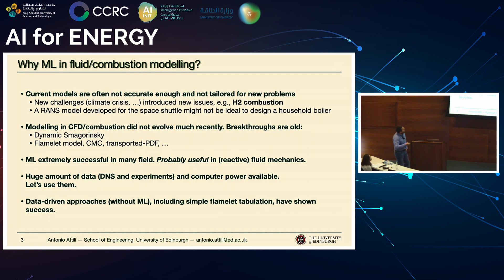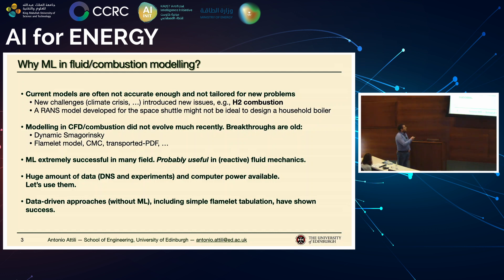Here are a couple of thoughts about why we could use machine learning in this field. One thing is that most of the models we have are certainly not completely reliable or accurate for what we would like to do. One reason is that we have new challenges created by today's world — the climate crisis means hydrogen and many other things we have to deal with, which means new technology, different devices, and some models developed before — say for the space shuttle — might not be useful for what we need today, like a steel plant.